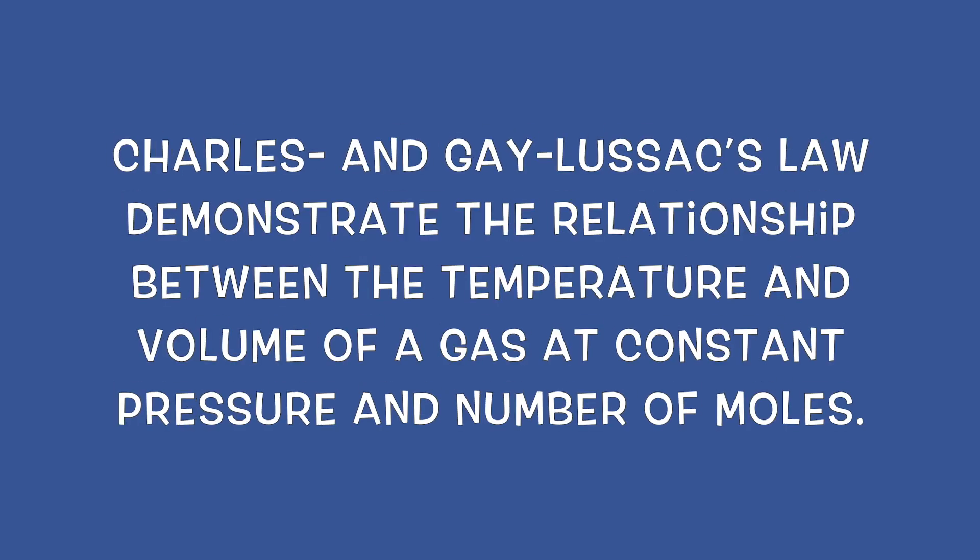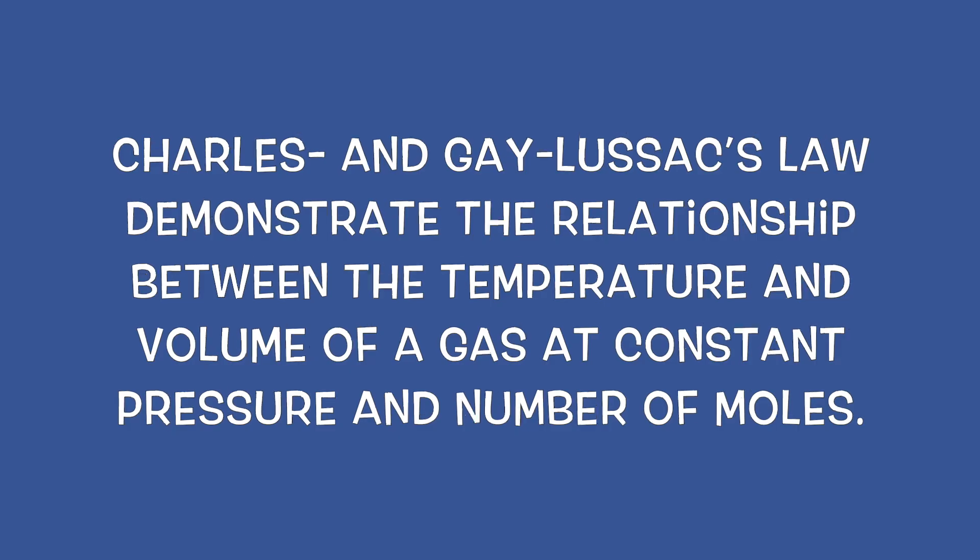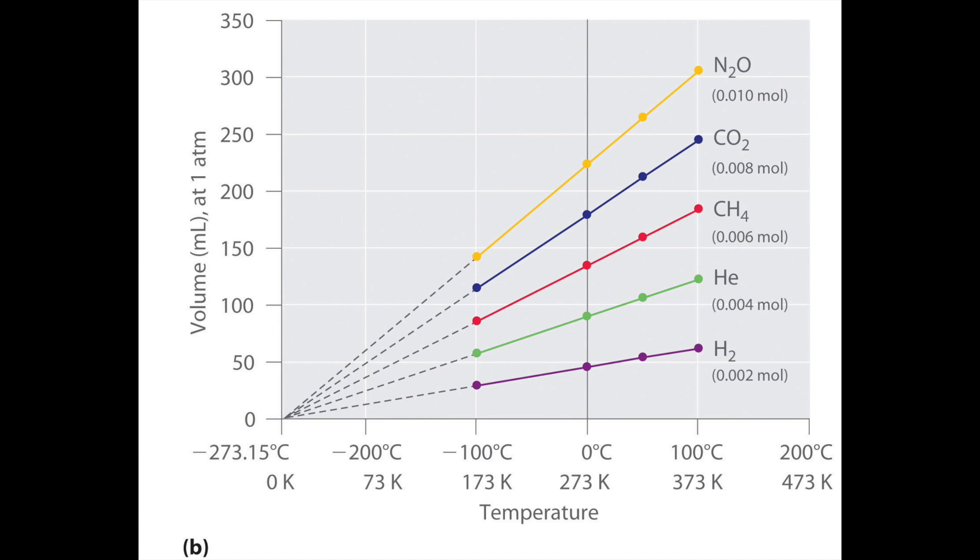The next simple gas law is Charles and Gay-Lussac's law, which demonstrates the relationship between the temperature and volume of a gas at constant pressure and number of moles. These experiments were carried out in the 1780s by French scientists Charles and Gay-Lussac. Both scientists were balloon enthusiasts and plotted volume of a gas versus temperature and showed there was a linear relationship.